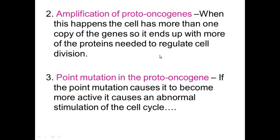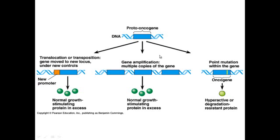So all three of those types of mutations can cause proto-oncogenes to become oncogenes. Here's a slide that demonstrates that — where you have it cut, translocated, and put on a new chromosome next to an active promoter, resulting in more growth.